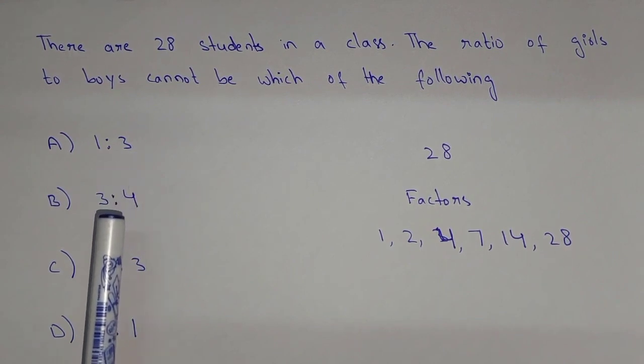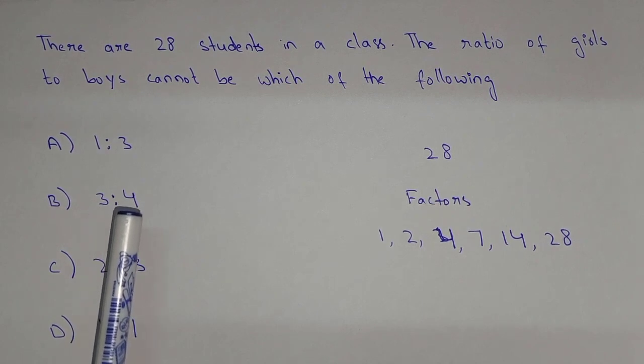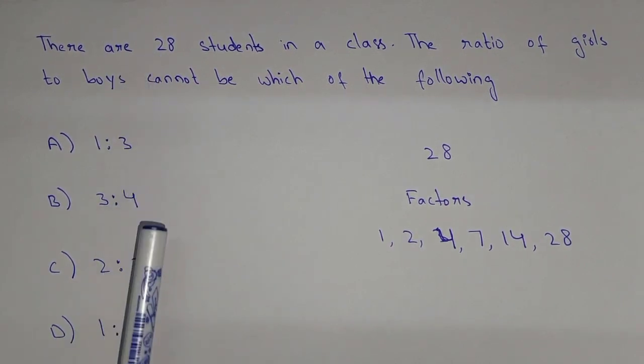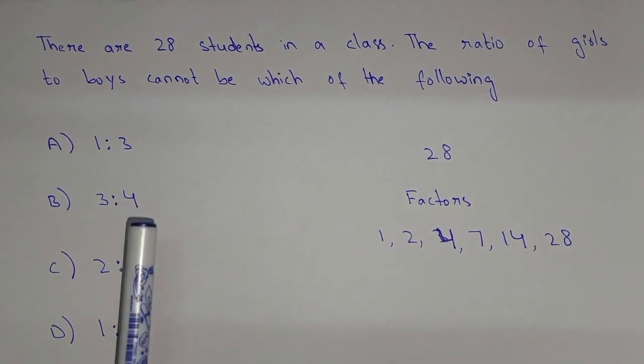And here we have 3 is to 4, it means 12 girls and 16 boys. So again, 12 plus 16, that is 28. So 7 is also over here. 3 plus 4, that is 7. So this is not the answer.